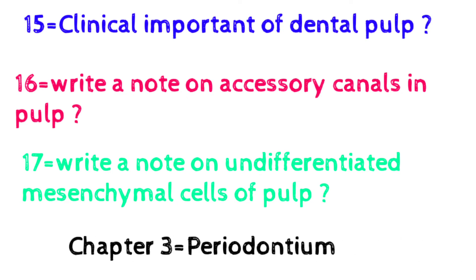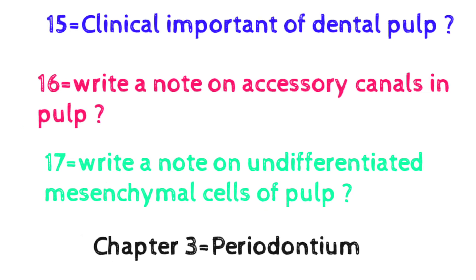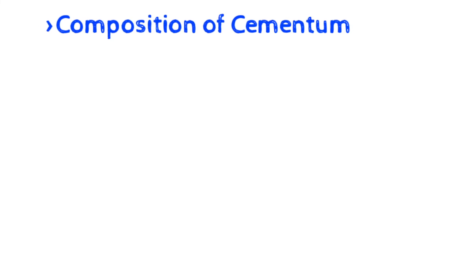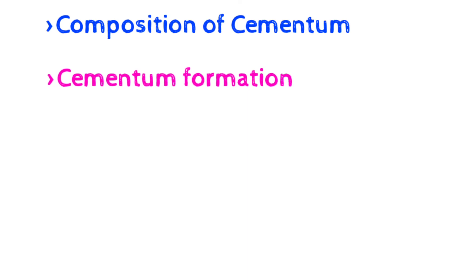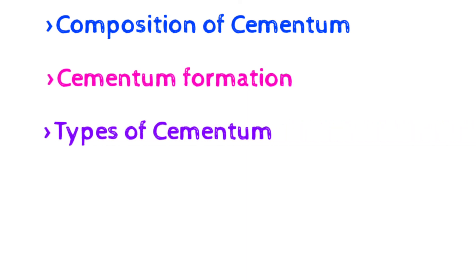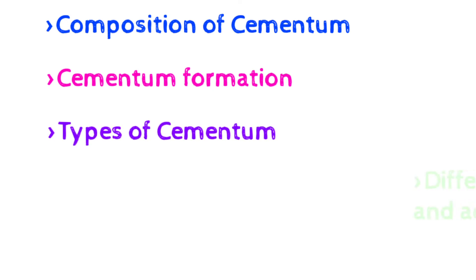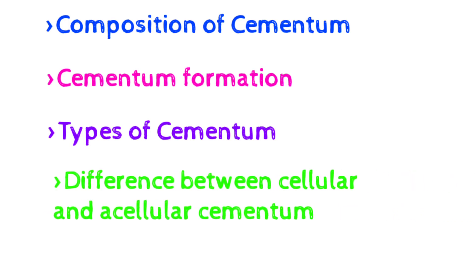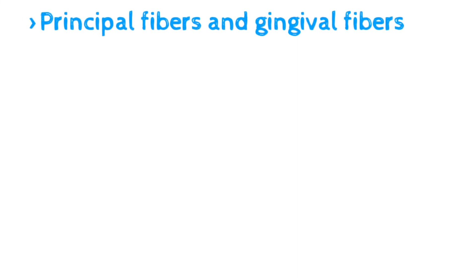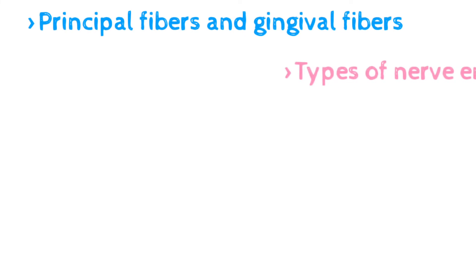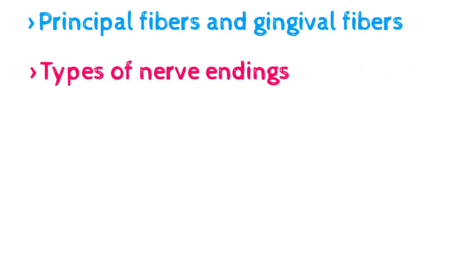Now come to chapter three — periodontium. The important topics are: first, composition of cementum; second, cementum formation; third, types of cementum; fourth, difference between cellular and acellular cementum; fifth, functions of PDL. Periodontium consists of four structures: cementum, PDL, alveolar bone, and parts of gingiva. Next important topics are principal fibers, gingival fibers, and types of nerve endings.